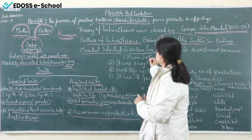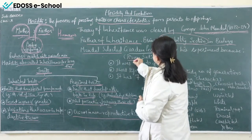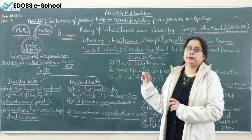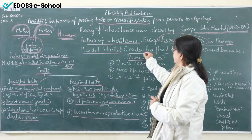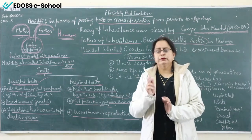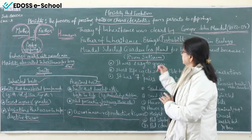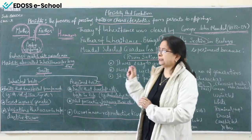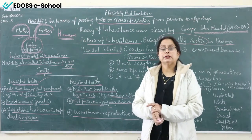The scientific name of the garden pea plant is Pisum sativum. This is very important to remember — it has been asked in board exams for one mark. So remember: Pisum sativum is the scientific name of the garden pea plant.